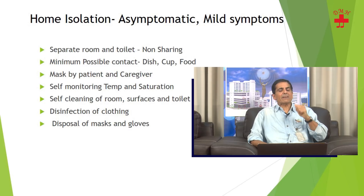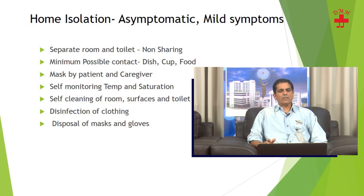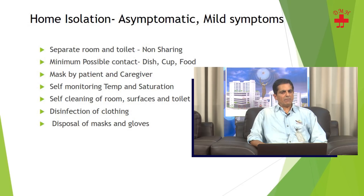The key principles of home isolation are: you must have a separate room and toilet not shared with anyone. You must have minimum possible contact regarding food, utensils, and clothes with uninfected family members. You must always wear a mask, and your caregiver should also always wear a mask. You must do self-monitoring of temperature and oxygen saturation, and self-cleaning of the room, surfaces, and toilet.